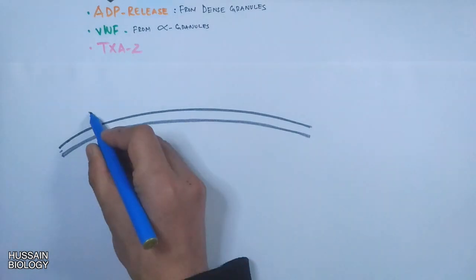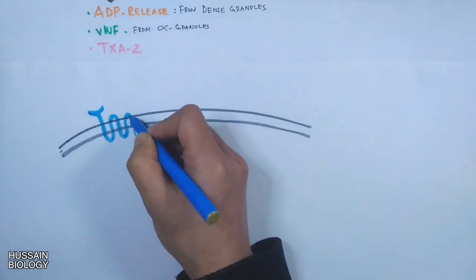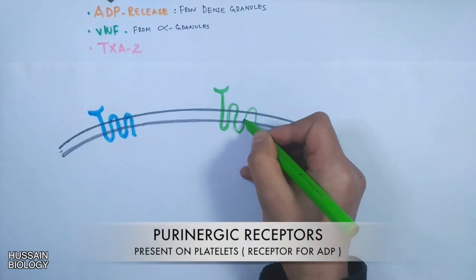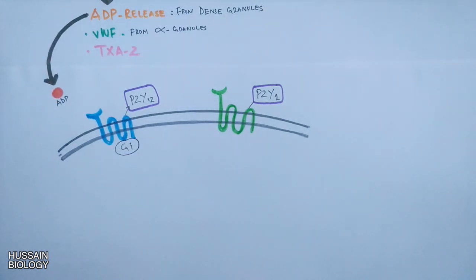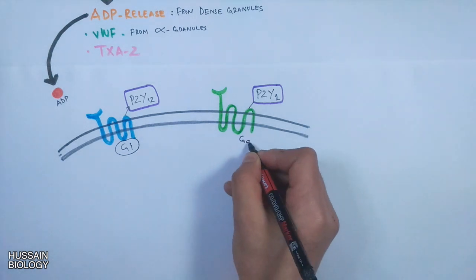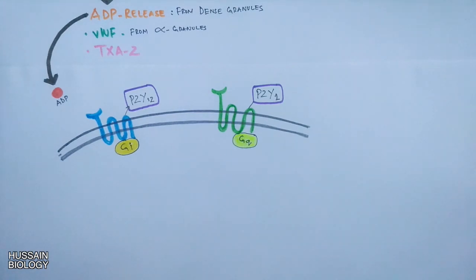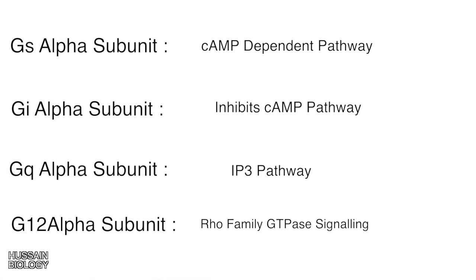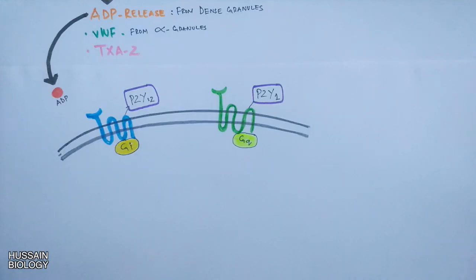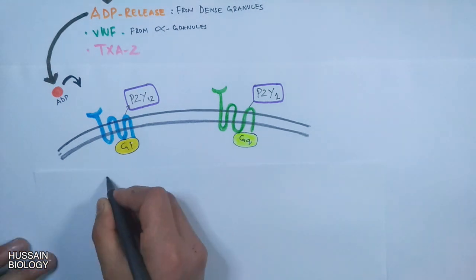The ADP molecule mediates platelet activation via purinergic signaling through two pathways. Platelets express two different purinergic receptors: P2Y12 receptor and P2Y1 receptor. P2Y12 belongs to the Gi class of GPCR proteins, while P2Y1 belongs to the Gq class of GPCR proteins. There are four families of G proteins with different alpha subunits: Gs alpha activates the cAMP pathway, Gi alpha inhibits the cAMP pathway, Gq alpha activates the IP3 pathway via PLC, and G12 alpha helps in Rho family GTP signaling.